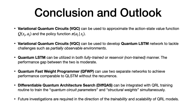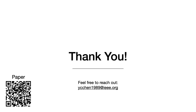In conclusion, quantum reinforcement learning uses variational quantum circuits to approximate the value function and policy function. Quantum recurrent neural networks enable learning in partially observable environments. The quantum fast weight programmer uses a separate network to reprogram the VQC. Differentiable quantum architecture search relaxes the restriction of manually designing quantum circuits. Future investigations are required to study the trainability and scalability of these quantum reinforcement models.